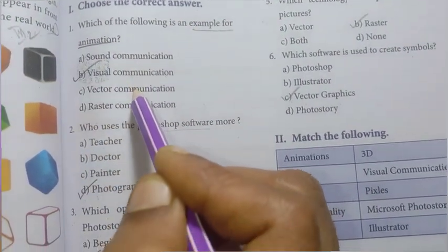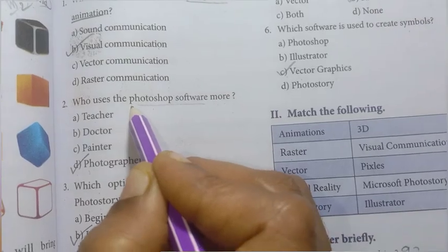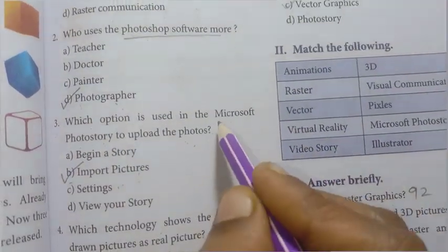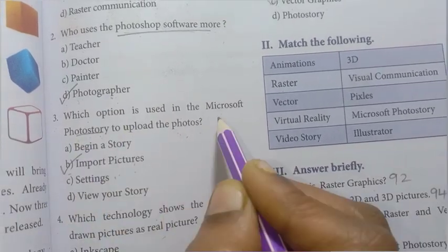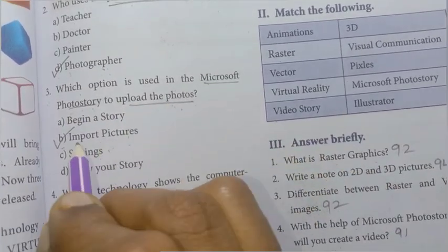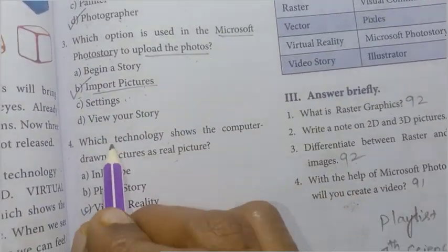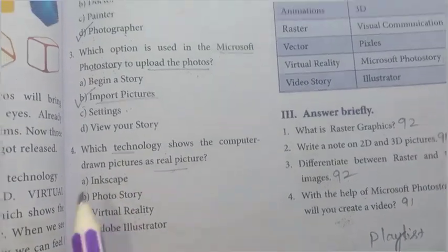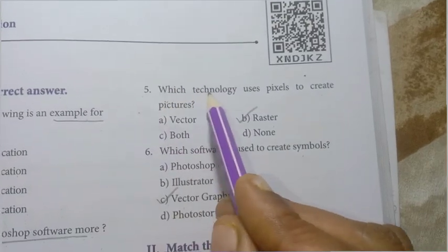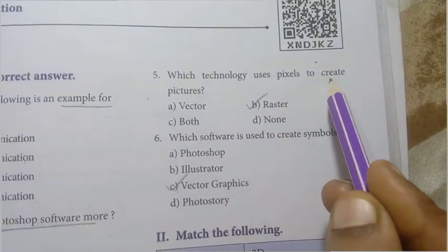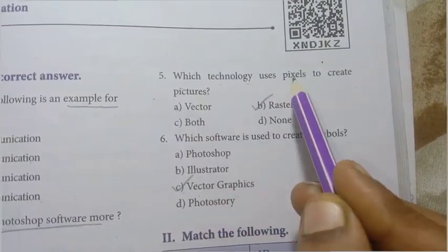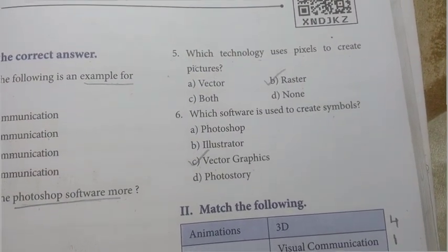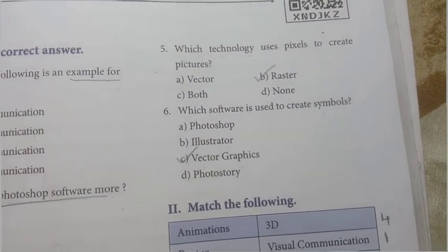For animation, the answer is visual communication. Photoshop software is very useful, and the user is photographer. In Microsoft Photo Story, the option to upload photos is import pictures. Which technology uses pixels to create pictures? That technology which uses pixels to create pictures is raster.